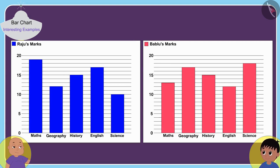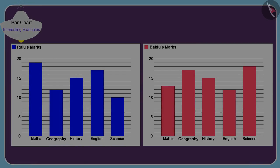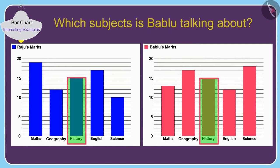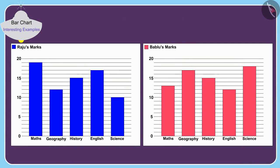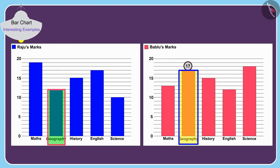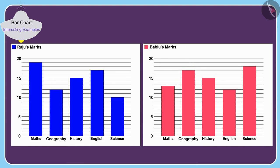Look Raju, I have got five marks more than you in this subject, and in this subject you have got five marks more than me. Children, can you tell us which subjects Babloo is talking about? If we look closely, in geography Babloo has got 17 marks and Raju has got 12 marks, so in geography Babloo has got 5 marks more than Raju.